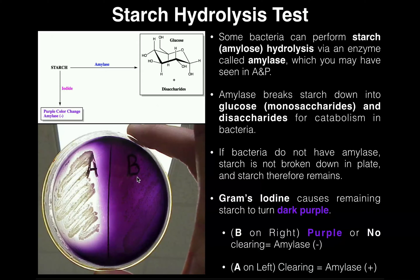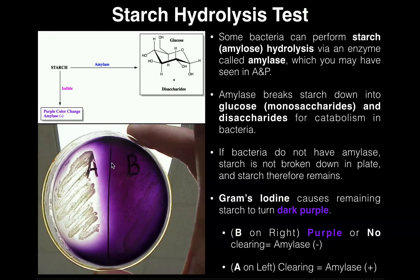Looking at the right side, species B — these bacteria are actually amylase negative. That means these bacteria do not have amylase. So why is this all purple? If the bacteria do not have amylase, they're not going to be able to break down starch. So all the starch remains on the right side of the plate — the starch is still there, they were unable to break it down due to the lack of amylase. When we pour the iodine on it, iodine stains starch purple. So everywhere there's purple, that means there's still starch. So if you have a plate and there's no clearing, or it's all purple, that means you have an amylase negative organism.